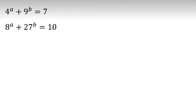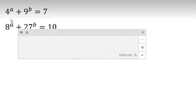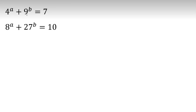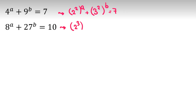When we see this problem, the bases are similar. We can say 4 and 8, and 9 and 27. So we can say 4 is 2 squared to the a, 9 is 3 squared to the b, equal to 7, and 8 is 2 cubed to the a plus 27 is 3 cubed to the b, equal to 10.